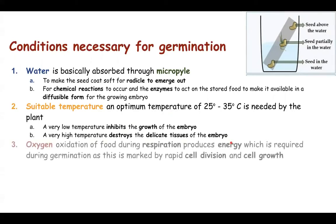The third condition is oxygen. Oxygen is required for providing energy through the process of respiration — it is used to produce ATP. This ATP provides energy for cell division and cell growth, both of which increase rapidly during the process of germination.